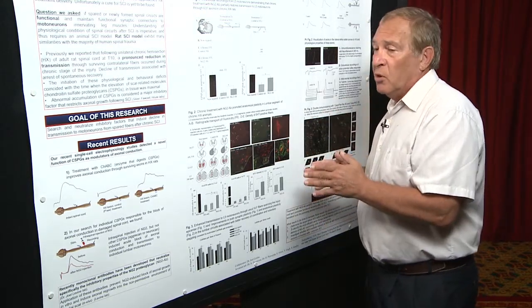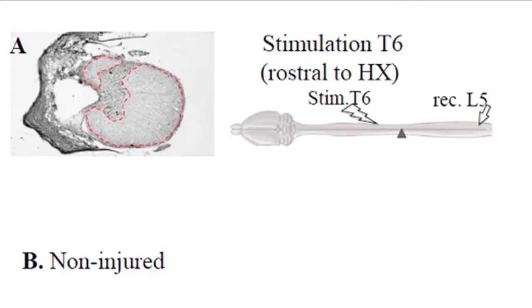We used a model of hemisection spinal cord injury when one side of the cord is completely lesioned and the other side remains intact. In non-injured rats, you can see that the signal is pretty big.